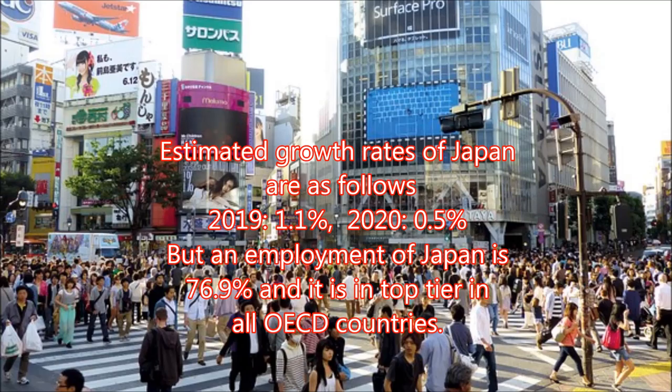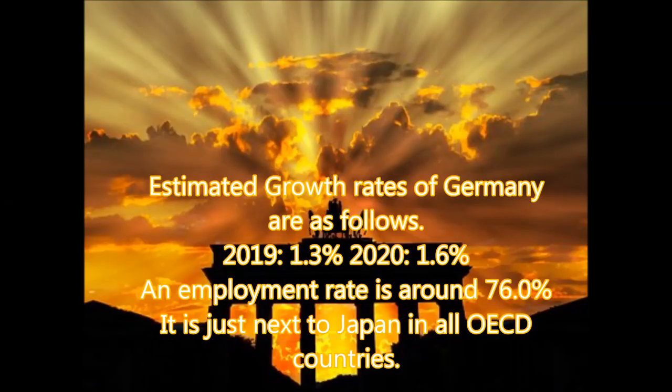The estimated growth rates of Japan are as follows: 2019, 1.1% and 2020, 0.5%. The employment rate of Japan is 76.9%, and it is top tier in all OECD countries.